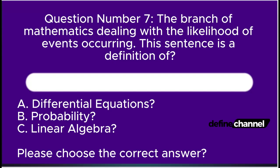Question number seven. The branch of mathematics dealing with the likelihood of events occurring. This sentence is a definition of: A. Differential equations, B. Probability, C. Linear Algebra. Please choose the correct answer.